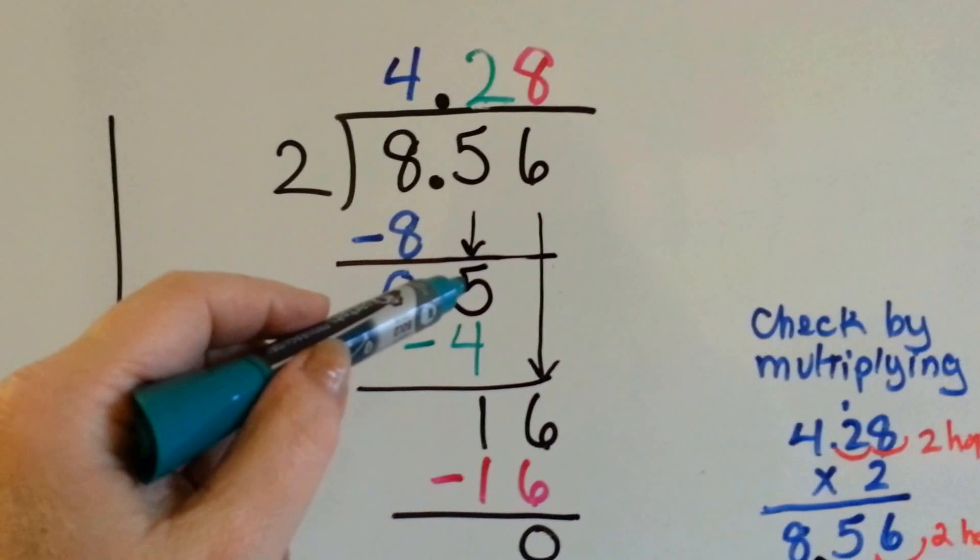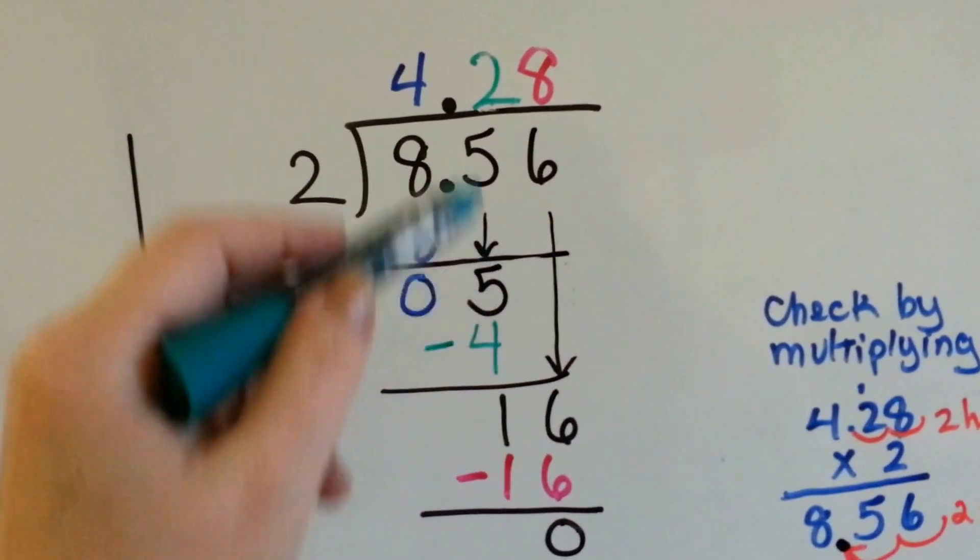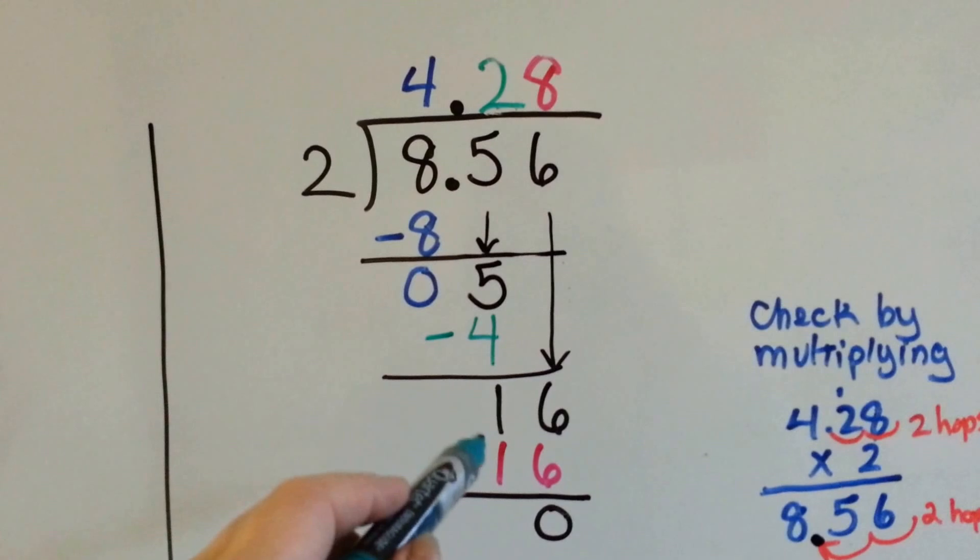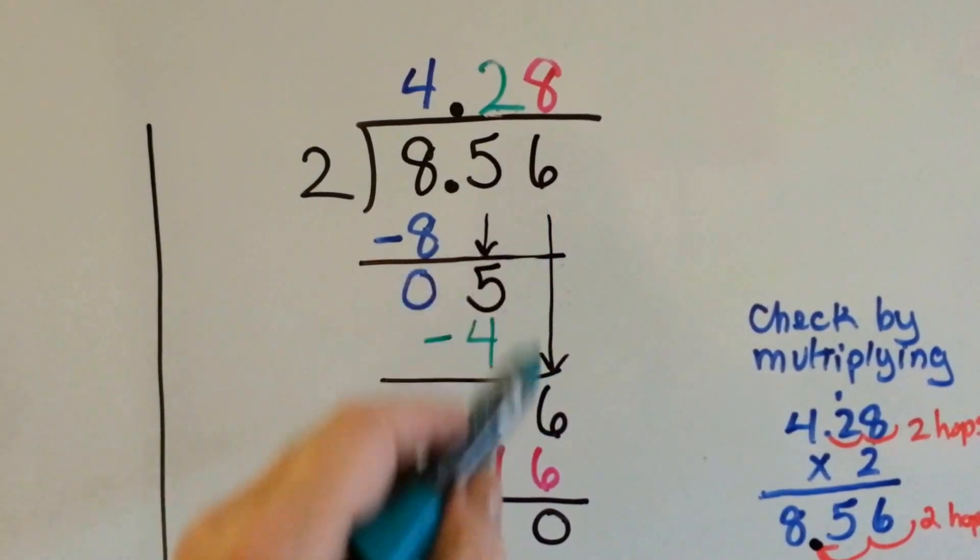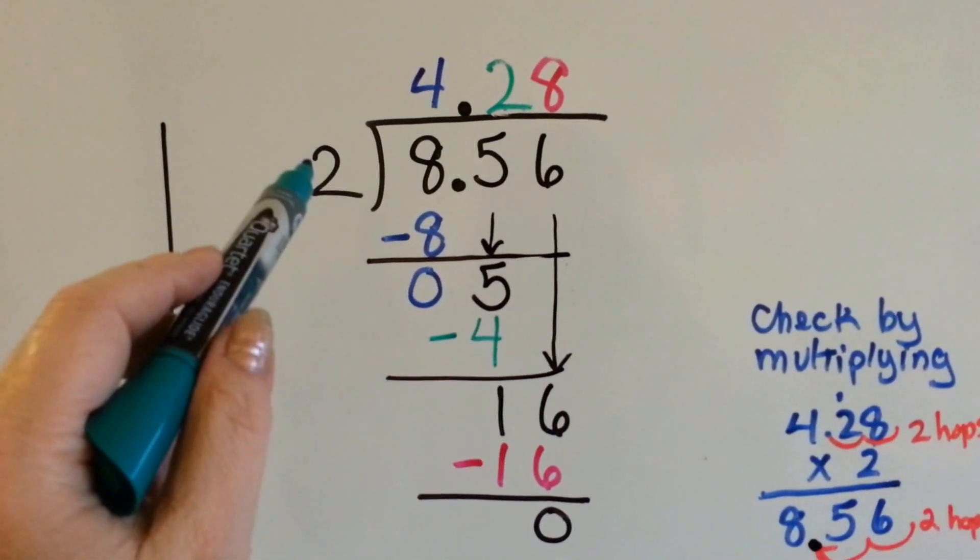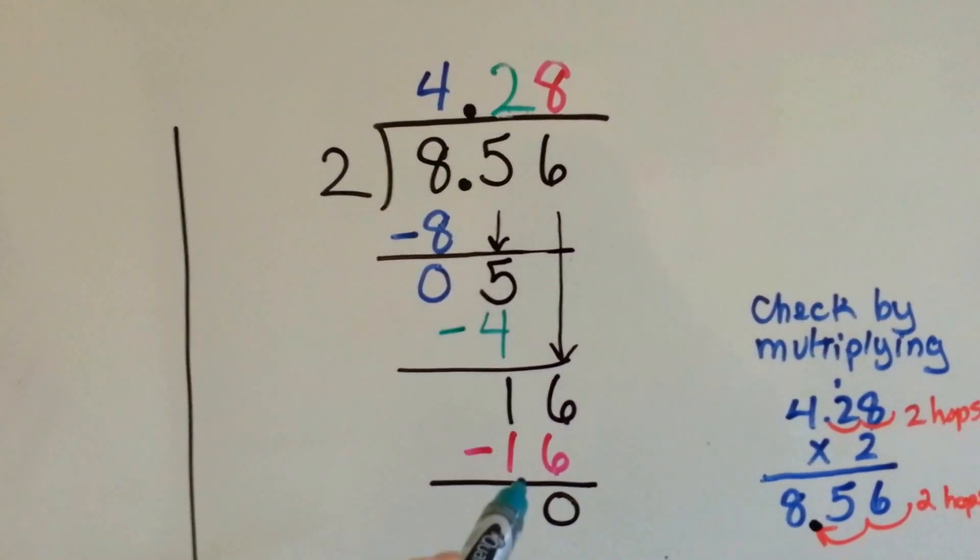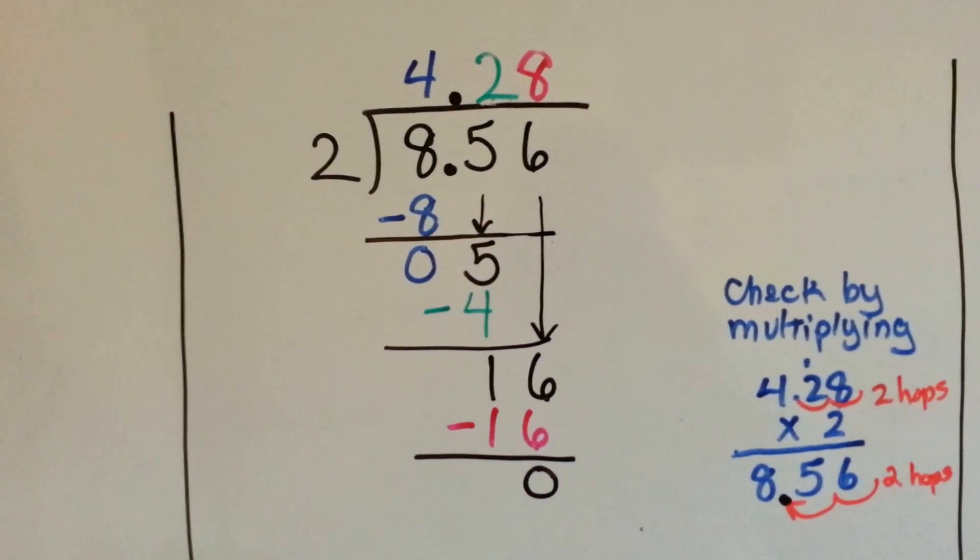So now it's the 5's turn to come down, and we ask ourselves how many times 2 can go into 5. Well, 2 times 2 is 4, so we put our 2 above the 5, because that's what we're dividing into, and we get a 1 left over, and it's the 6's turn to come down. How many 2's can fit into 16? 8. That's perfect. 2 times 8 is 16. We do our subtraction and get 0.